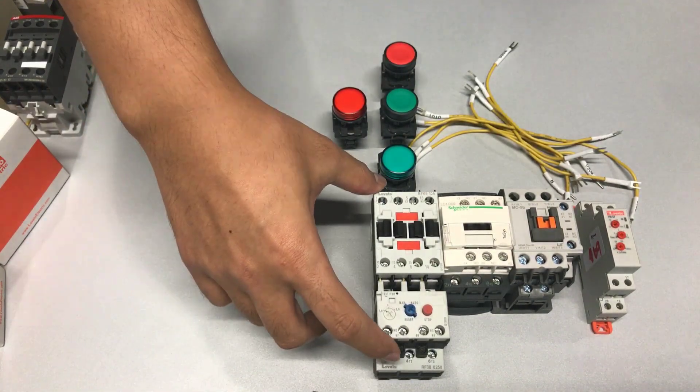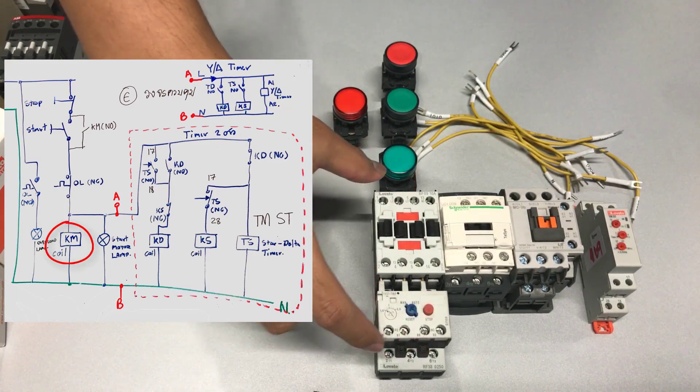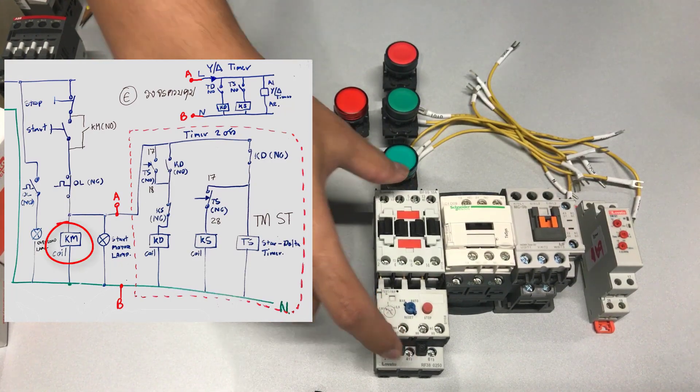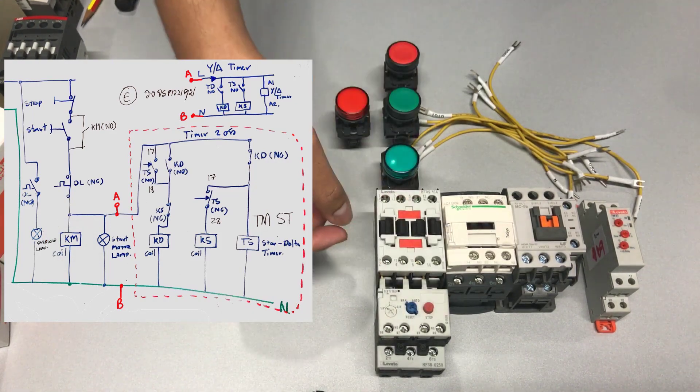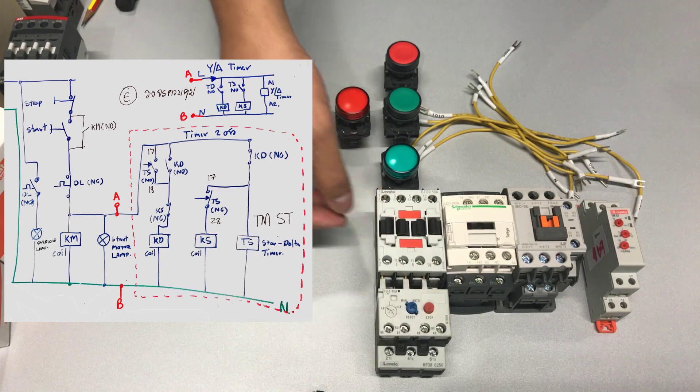After that, you will need three contactors. The first one is the main contactor labeled KM. This one is from Lovato Electric and you will need one with a normally open auxiliary contact.